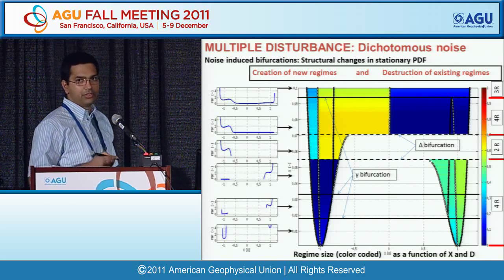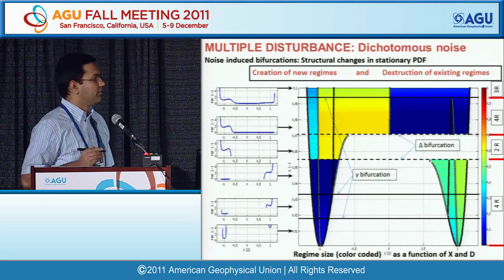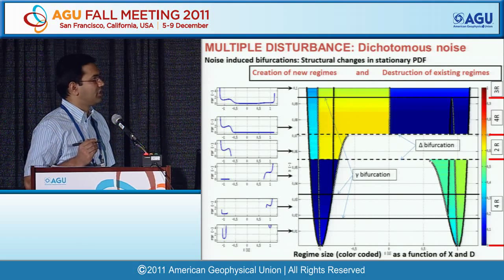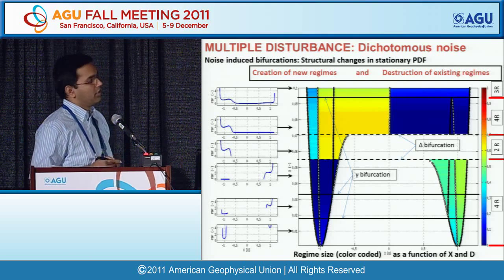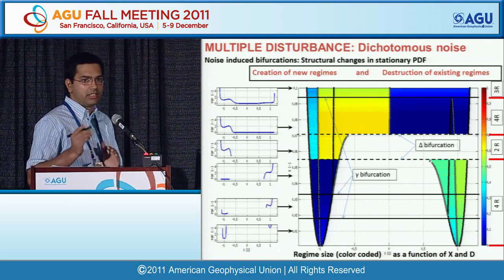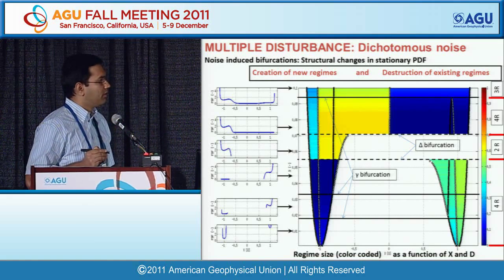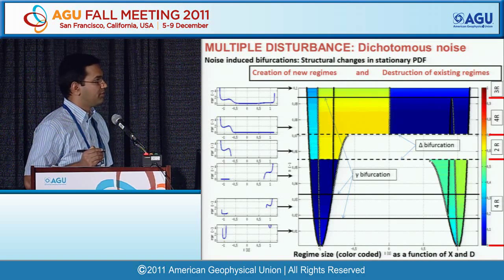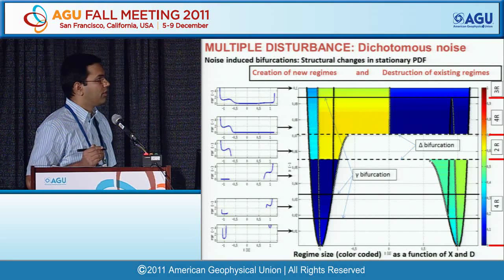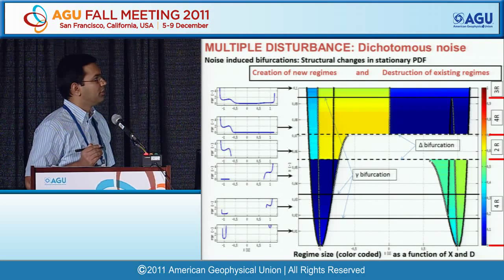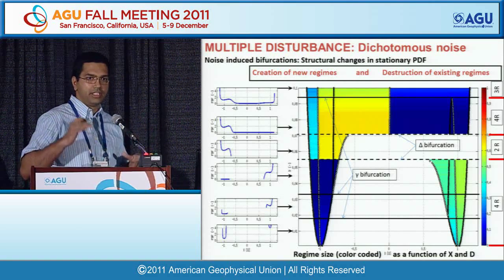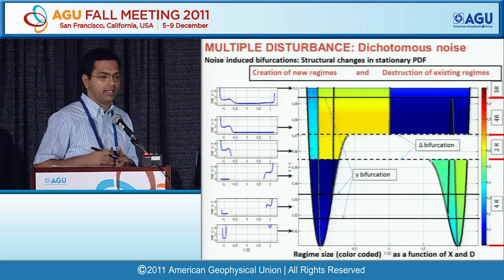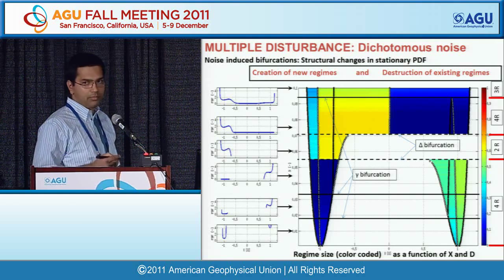The more interesting case arises with dichotomous noise. As you change the noise scaling parameter, you see structural changes in the PDFs — what I call noise-induced bifurcation. When you have a structural change in the PDF, you have a bifurcation, meaning the number of regimes changes as you go from low to high noise. White circles representing unstable points determine how many regimes exist. Not only is regime probability changing, but regimes themselves are getting extinguished and then coming back as noise varies.